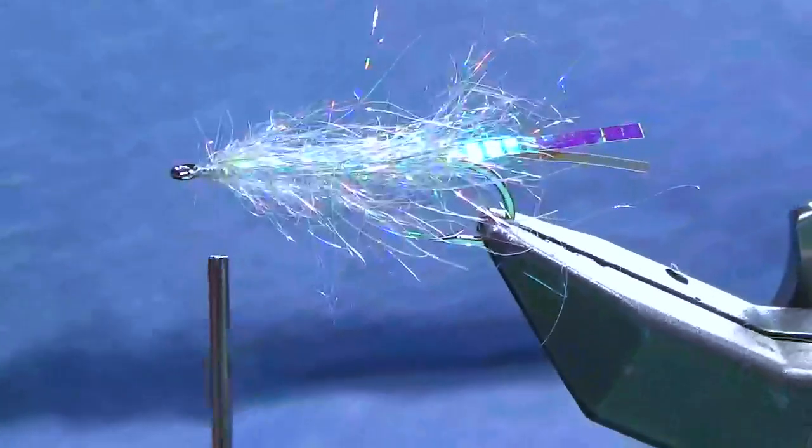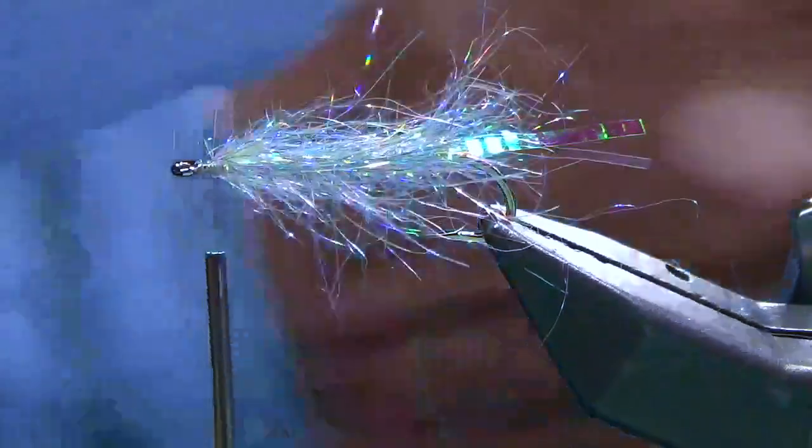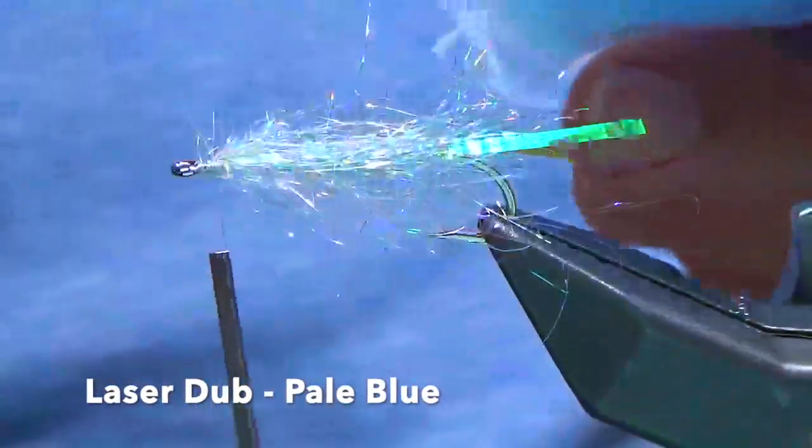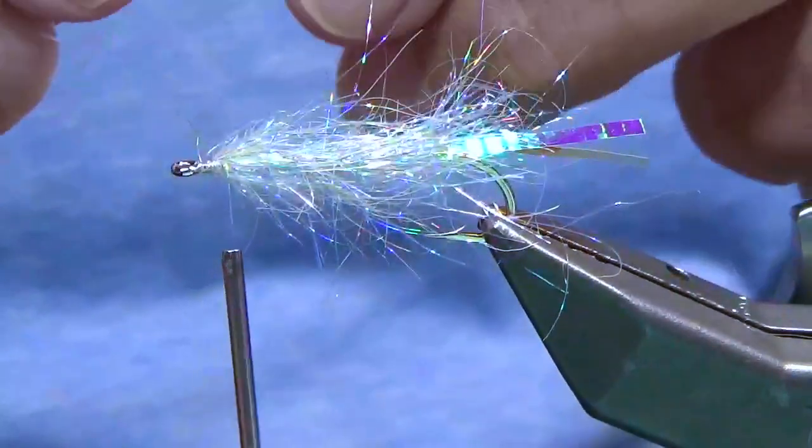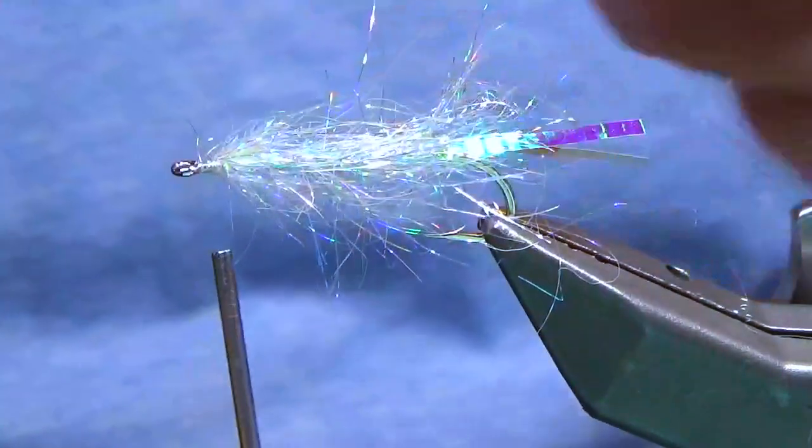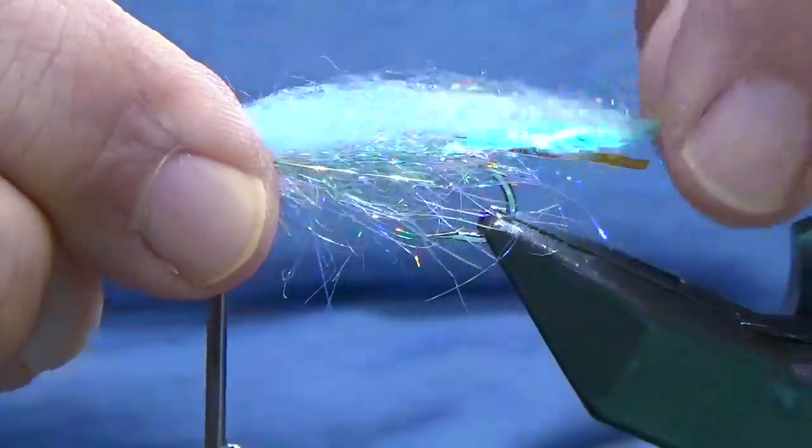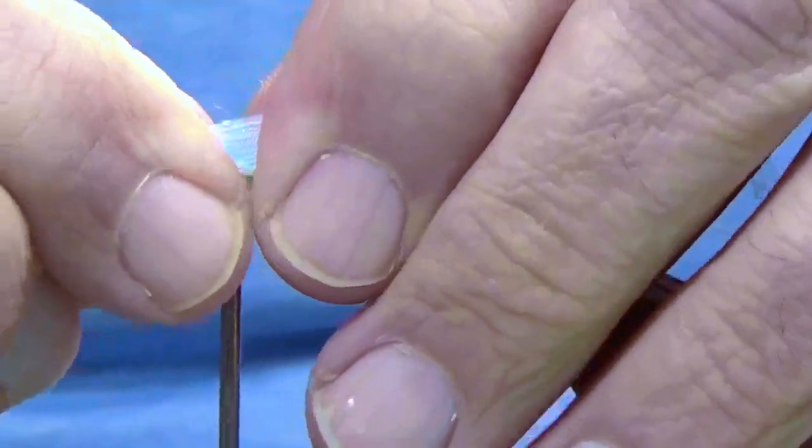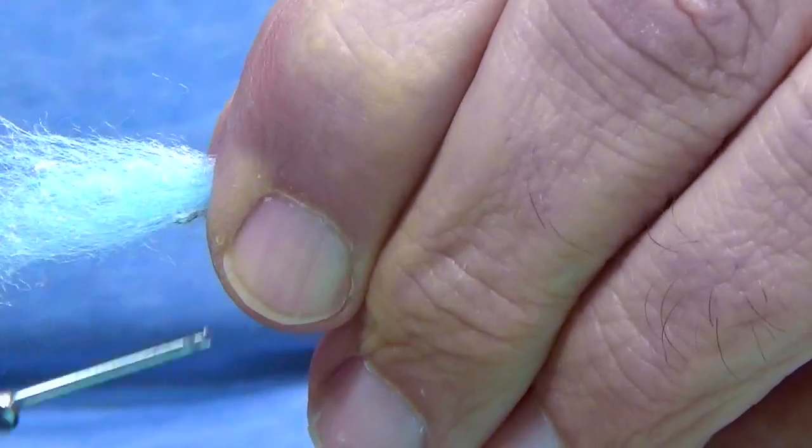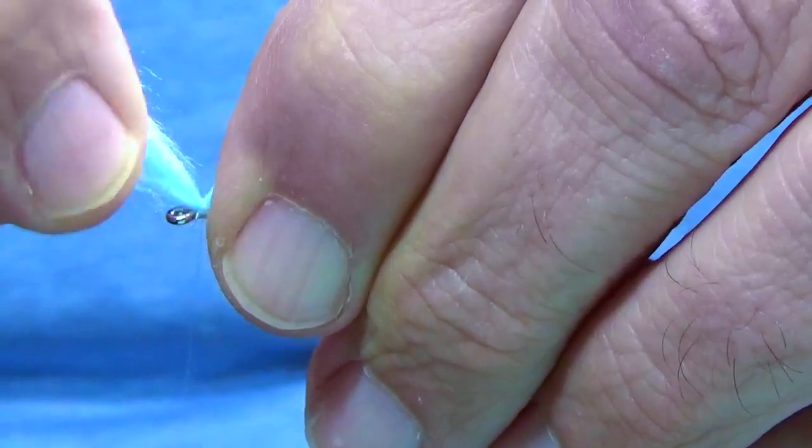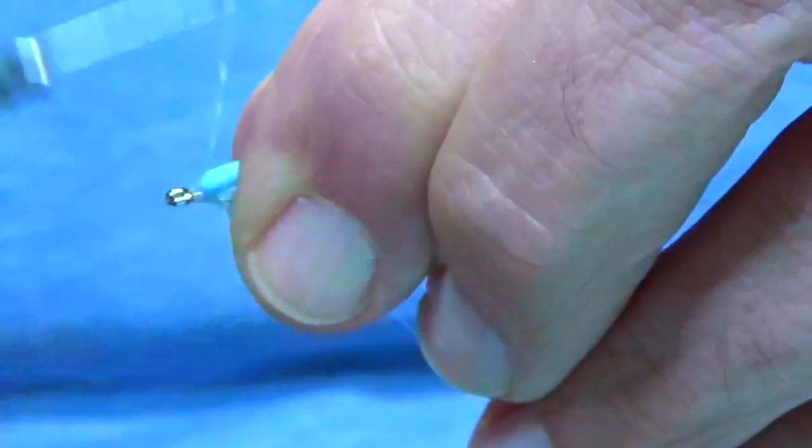Now for the back part of this fly, there's two different colors I want to lay down. I want to utilize Senyo's laser dubbing in blue, and I'm just going to take a pinch. I don't need it to be too heavy, I'm just looking for an accent color. I'm going to pre-knit, basically grab all the tips and do my best to make sure they're aligned. Now I'm going to lay it right across on the back of that hook, and I just want the tips to come down to where the end of that lateral line ends.